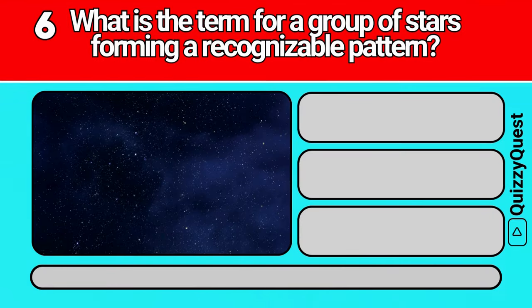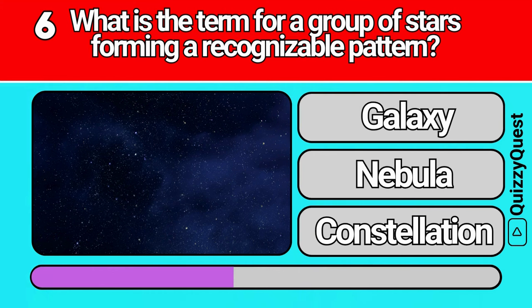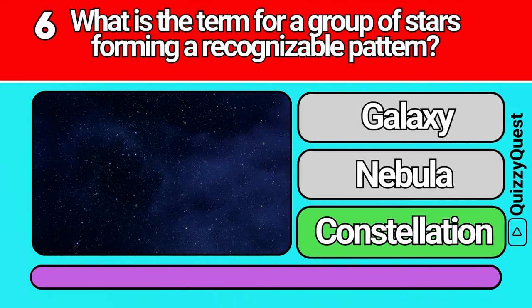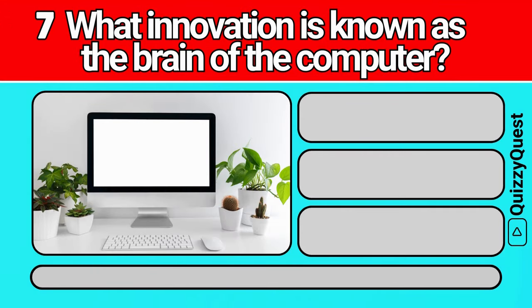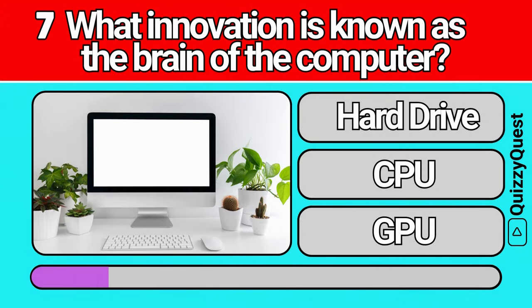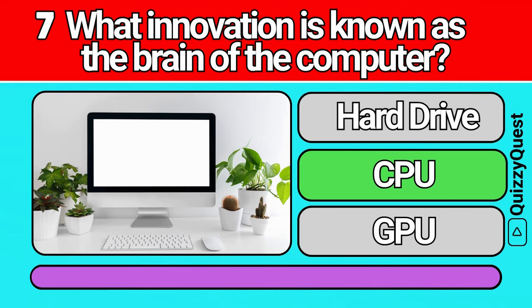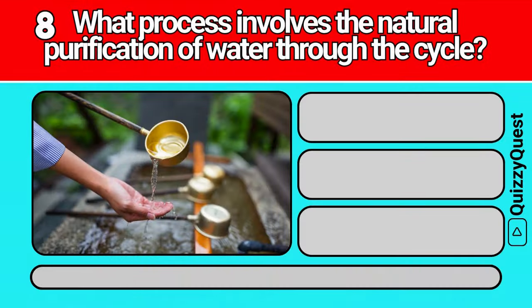What is the term for a group of stars forming a recognizable pattern? What innovation is known as the brain of the computer? What process involves the natural purification of water through the cycle?